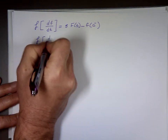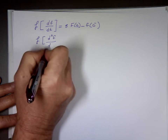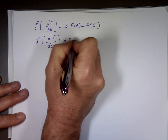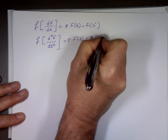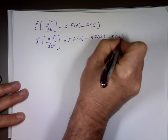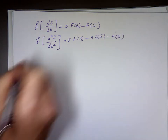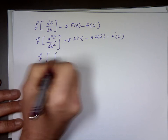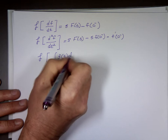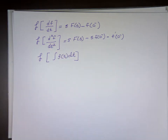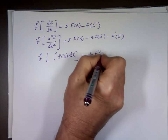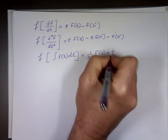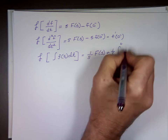If you want the Laplace of the second derivative d²f/dt², that equals s² F(s) minus s·f(0 minus) minus f prime of (0 minus). And the Laplace of the integral equals 1 over s times F(s), plus 1 over s times the integral from negative infinity to 0 of f(t) dt.